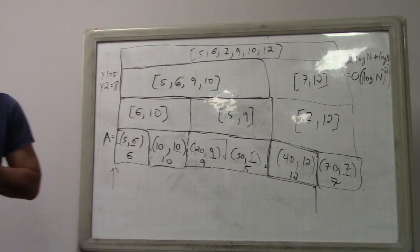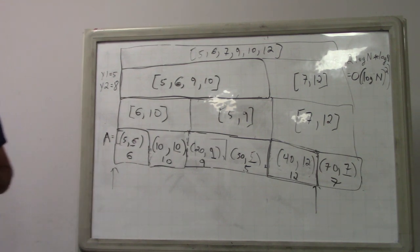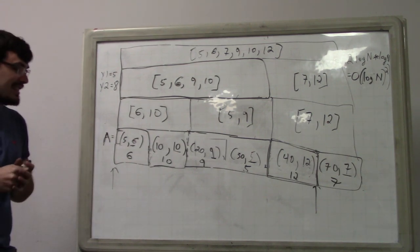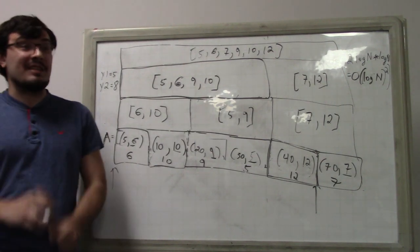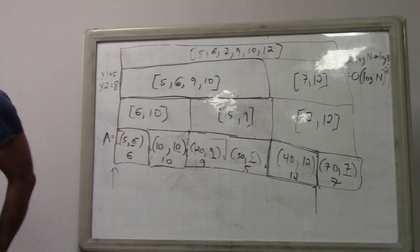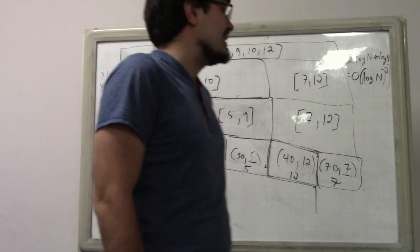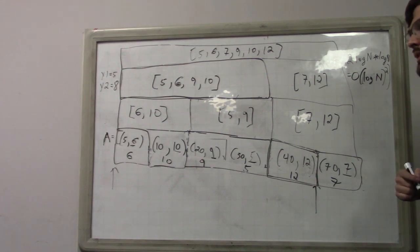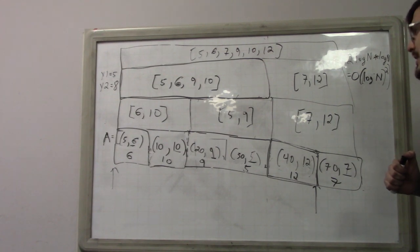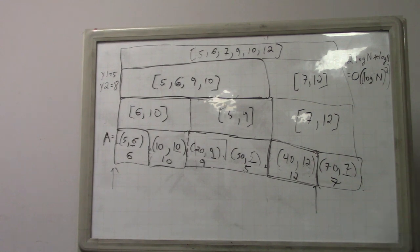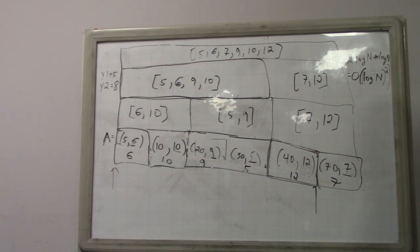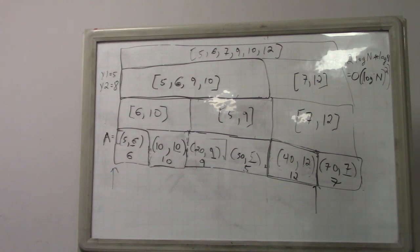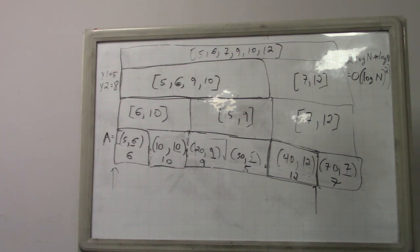Can we actually improve beyond O(log² n)? The key trick is: how do you avoid having to do a binary search in every cell? That's the key to unlocking even better performance.